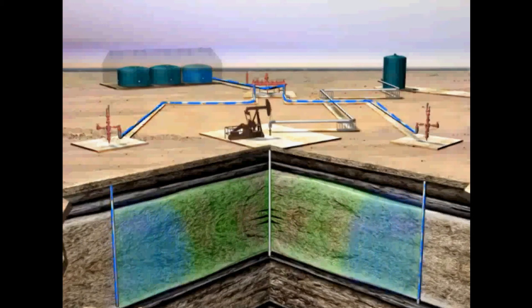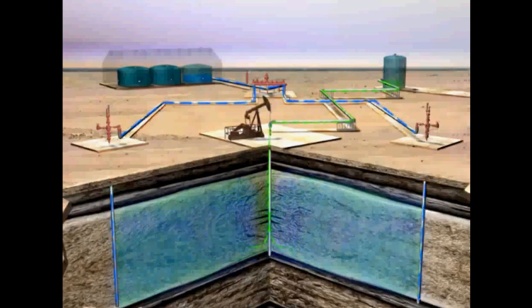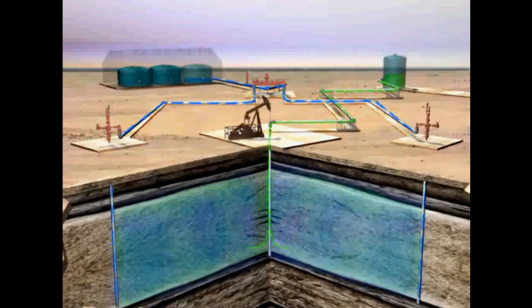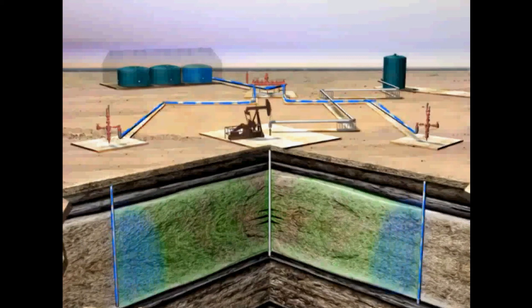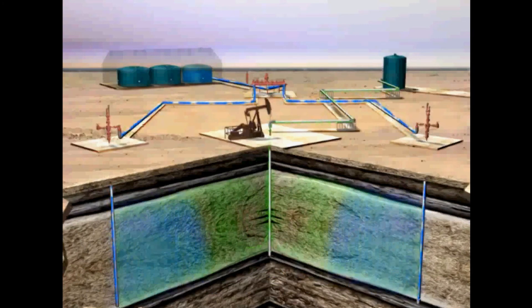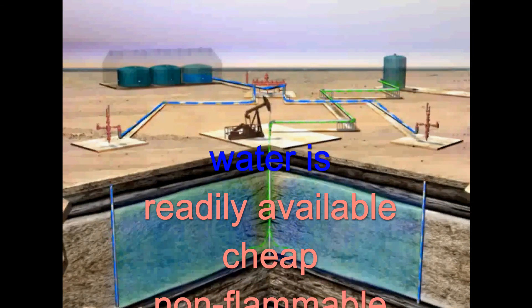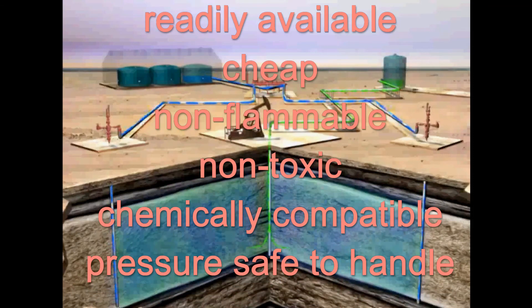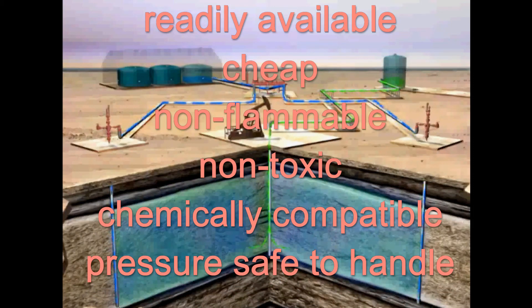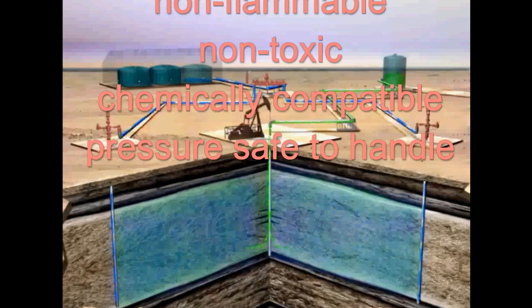Water flooding is where water is flooded into the well through injector wells located nearby. Since water and oil do not mix easily, water that is pumped down into the formation displaces the oil, thereby pushing it toward the producing well. This is called fluid displacement. The reason this method is so popular is because water is readily available, cheap, non-flammable, non-toxic, and chemically compatible with reservoir fluids. Its pressure is safe to handle, and it works very well.